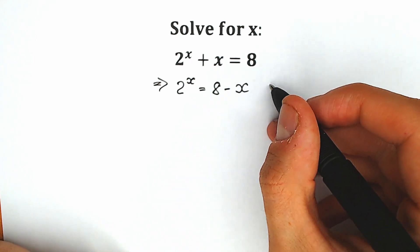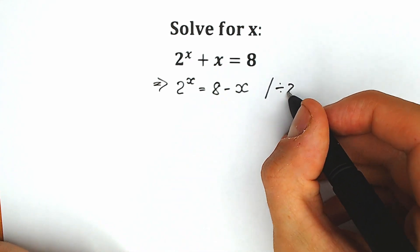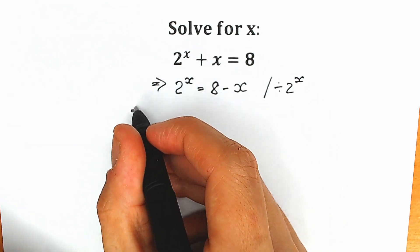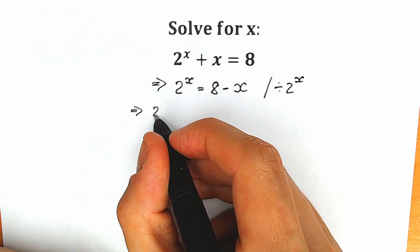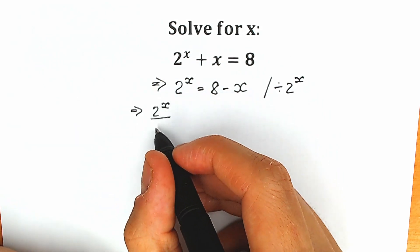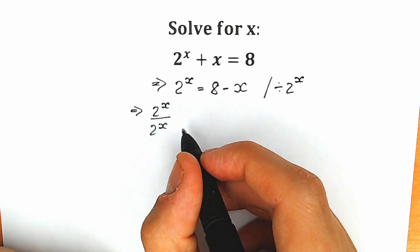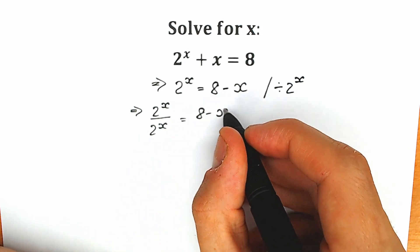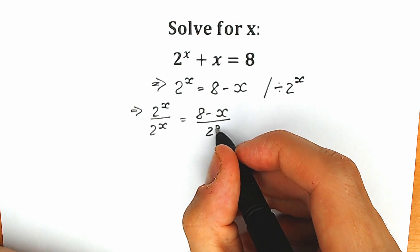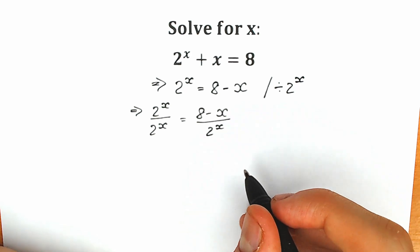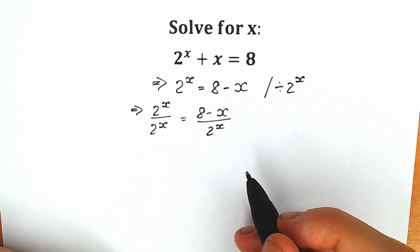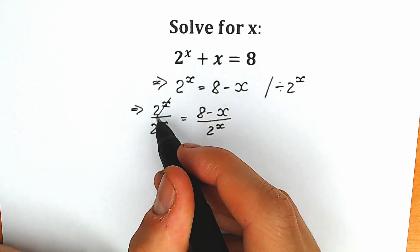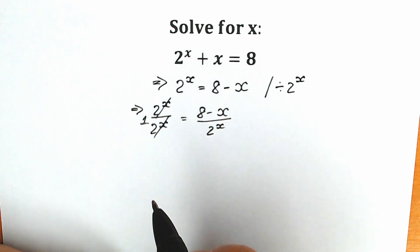Next, we're going to divide both sides by 2 to the power x. As a result, on the left side we have 2 to the power x divided by 2 to the power x, and on the right side we have 8 minus x divided by 2 to the power x. Of course, on the left side we can cancel everything, leaving only 1.